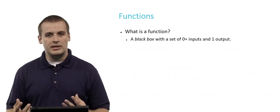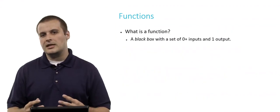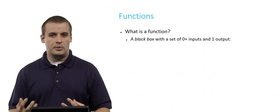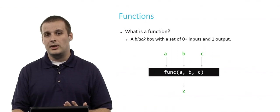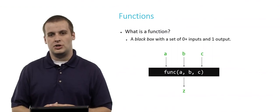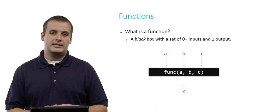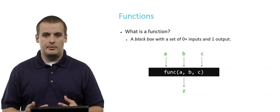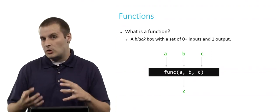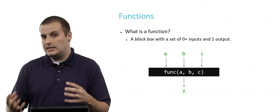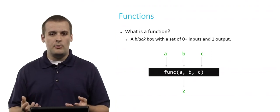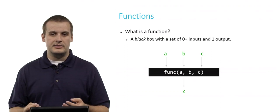What is a function? Well, a function is really nothing more than a black box — a black box that has a set of zero or more inputs and a single output. So for example, this might be a function called func. It takes three inputs, a, b, and c. Inside that black box we don't know exactly what it does, but it processes the inputs in some way and gives us a single output, in this case z.